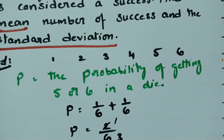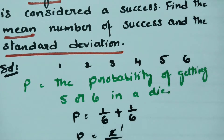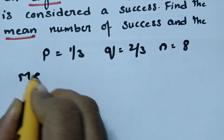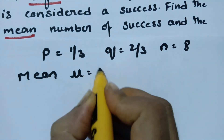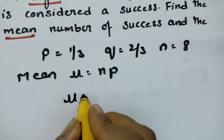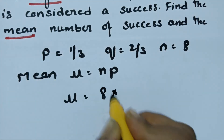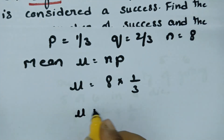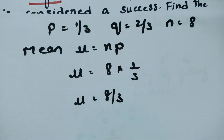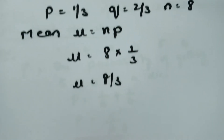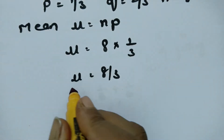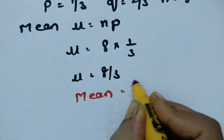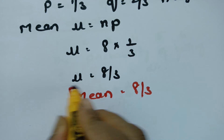Now I am going to calculate the mean of this binomial distribution. The mean formula is mu equal to N into P. So mean is equal to 8 into 1 by 3, which gives the mean equal to 8 by 3.